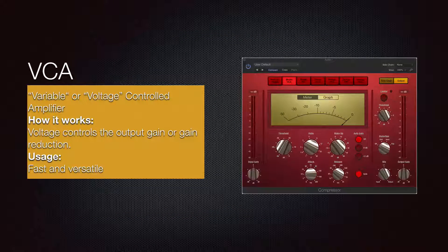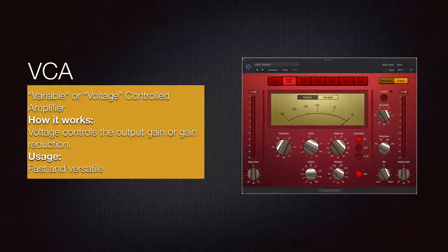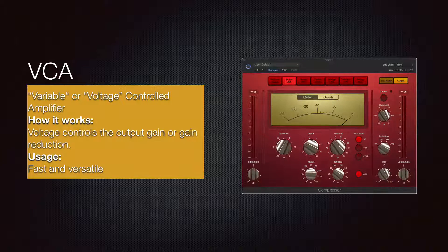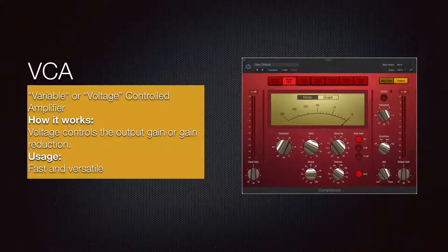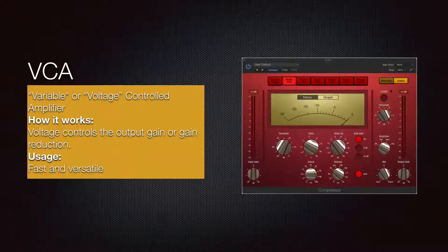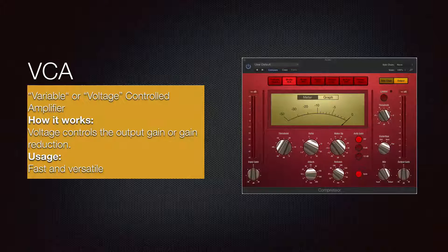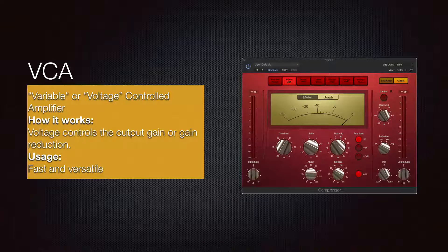A VCA compressor, which stands for variable or voltage controlled amplifier, uses a voltage control to change the output gain or gain reduction. These compressors are very versatile and fast, and we have three types we will talk about more in depth. They work on pretty much anything: vocals, drums, bass, guitars — really depends on the settings you use.